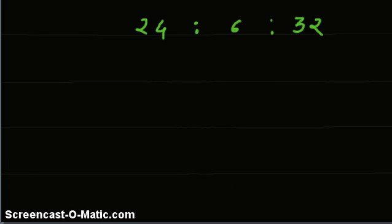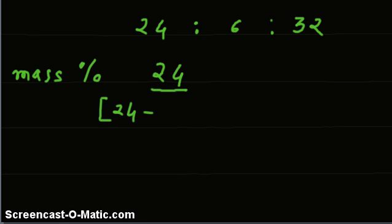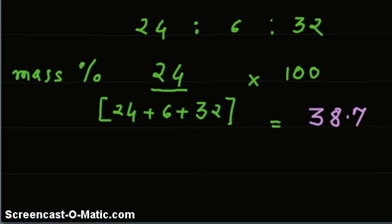Now, this is the ratio of mass in grams. In order to find mass percentage, we will divide the mass of individual atom by total of the masses. That is 24 plus 6 plus 32, and multiply by 100 for percentage. So, we get the answer 38.7%. This is for carbon.